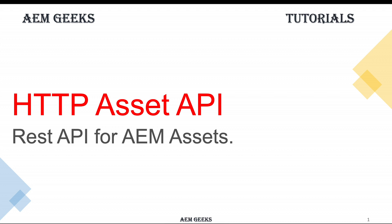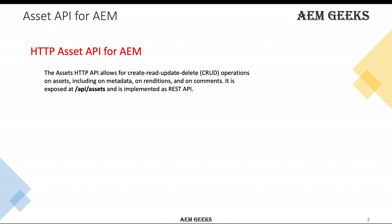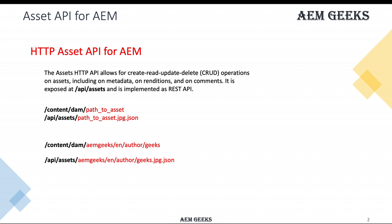In this tutorial I'll talk about the REST Asset API for AEM. You can perform CRUD operations on AEM assets and folders using these APIs. At a high level, you call it starting from /api/assets and then the path of either your folder or your asset. We'll see that in detail in the demo. For example, if you have an asset called 'geeks', you just use /api/assets and then the path of your asset.